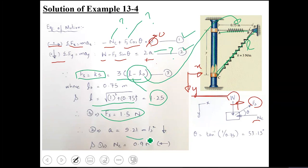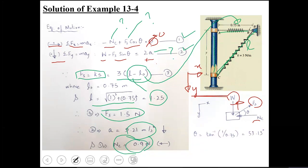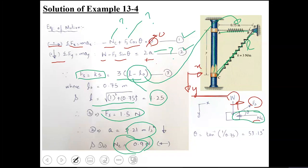Solving the system gives the values of acceleration and normal reaction force. The normal reaction force Nc comes out as a positive quantity, confirming that our assumed direction — towards the negative X-axis — is correct.